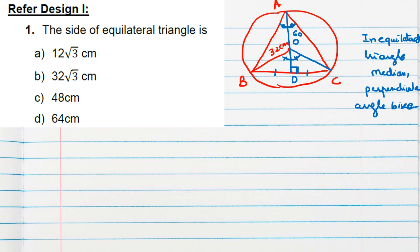Angle A is 60°, since it is an equilateral triangle and each angle is 60°. Now for the complete angle at O: by the theorem from class 9, the angle subtended at the center is double the angle subtended at any point on the circle, so angle O will be 120°. Since AD is the bisector, we get 60° on each side. With the perpendicular giving 90°, angle B in triangle OBD will be 30°.